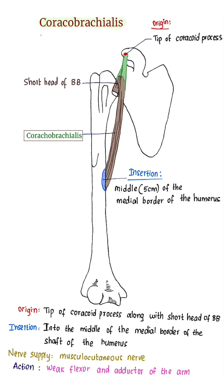In this video we are going to learn about coracobrachialis. It is one of the muscles of the anterior compartment of the arm. The anterior compartment of the arm consists of three muscles: biceps brachii, coracobrachialis, and brachialis.